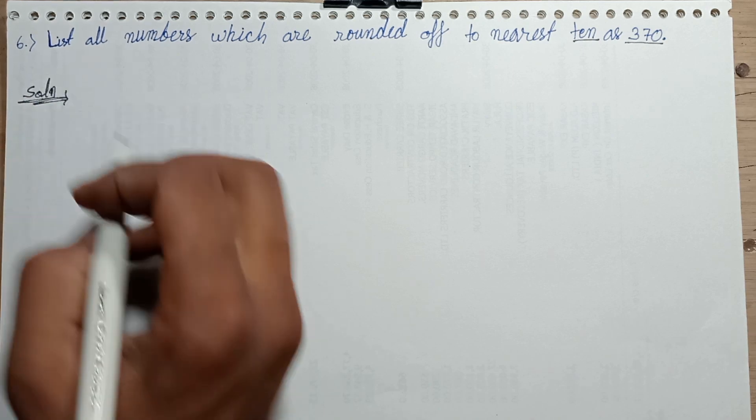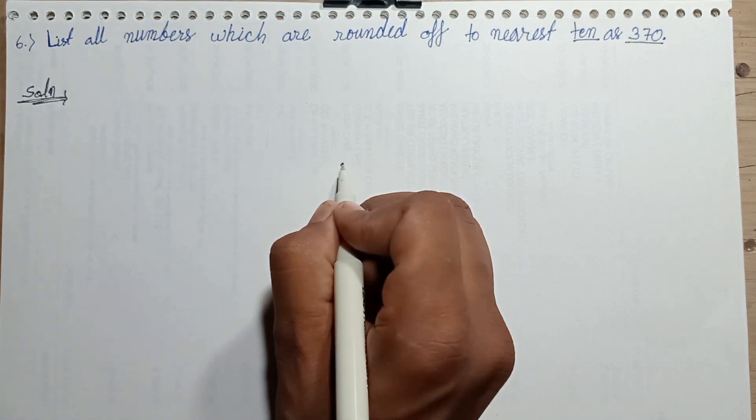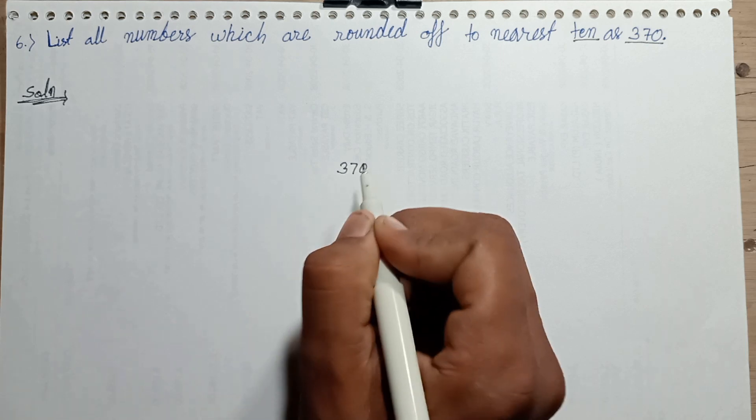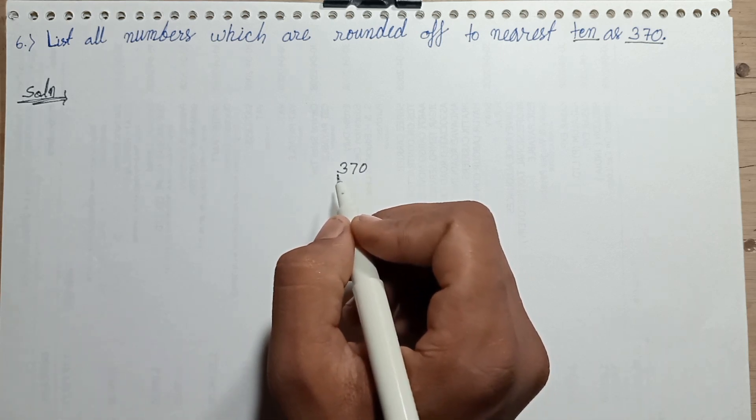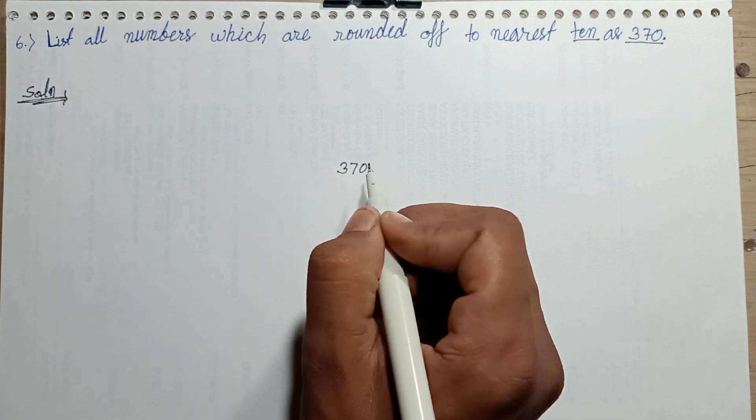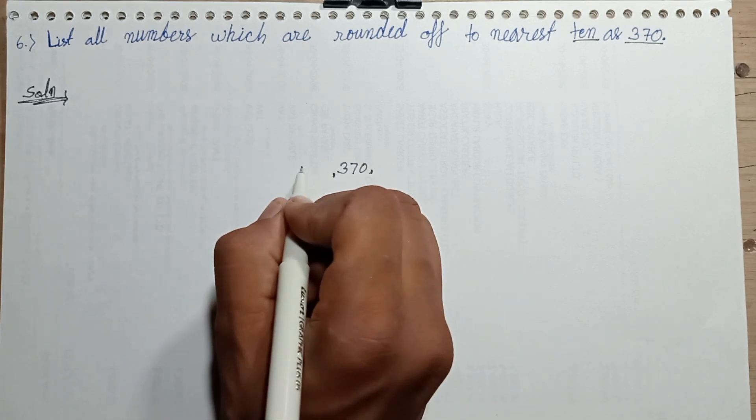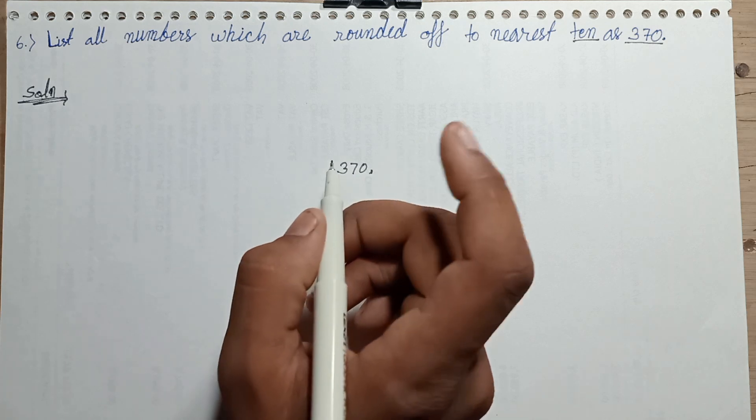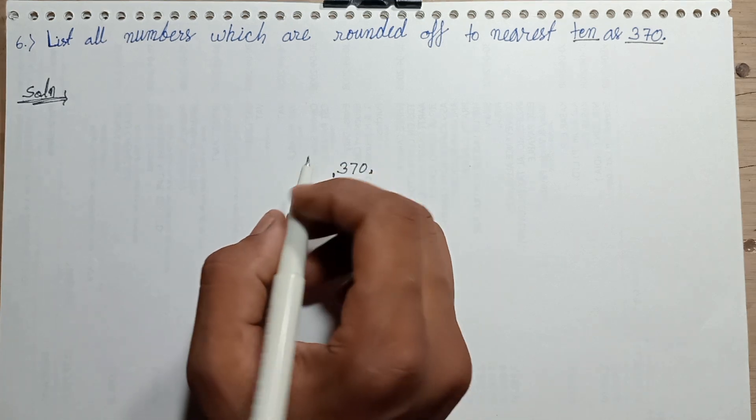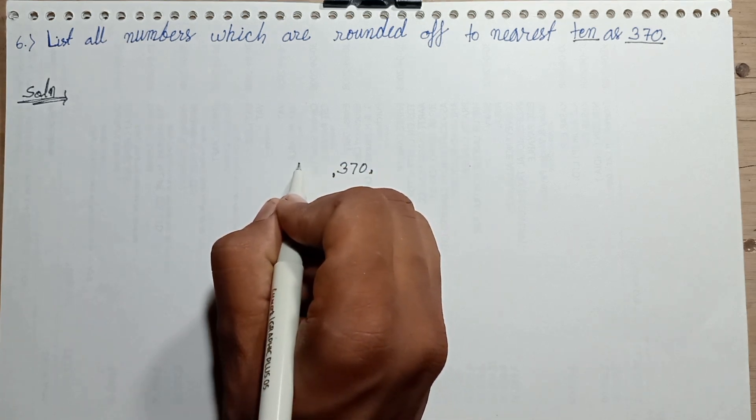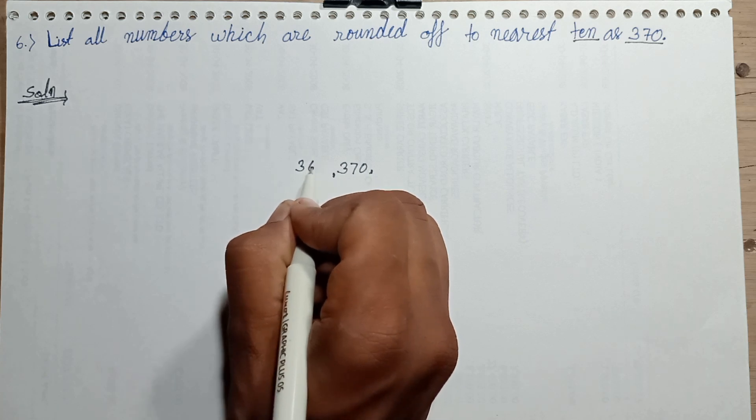Solution. 370 is the midpoint. Decreasing 5 times. First of all, decreasing 1, five times: 369.